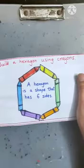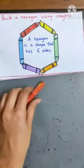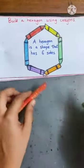I will show you a card and you have to build a shape with crayons. You have to build that shape. Oh, it's a hexagon! Make a hexagon using crayons. How will you make a hexagon?